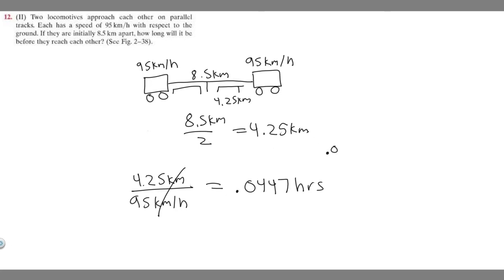all you got to do is take your hours. So 0.0447 hours, we know that for every one hour, there's 60 minutes. So if you want it in minutes, all you got to do is multiply by 60.